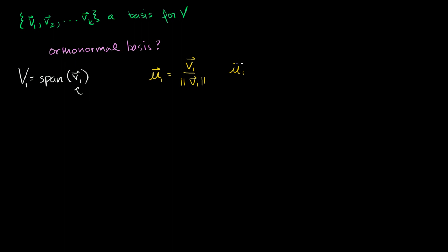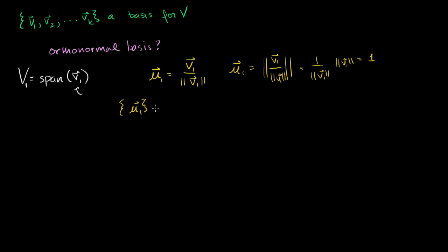The length of u1 is going to be the length of v1 divided by the length of v1, which is just 1. So u1 will have a length of 1. So if we define the set of just u1, we can say that the set of u1 is an orthonormal basis for the subspace V1. That was trivially easy — if k is 1, we're done. We just normalize the vector. There's nothing else to be orthogonal with.